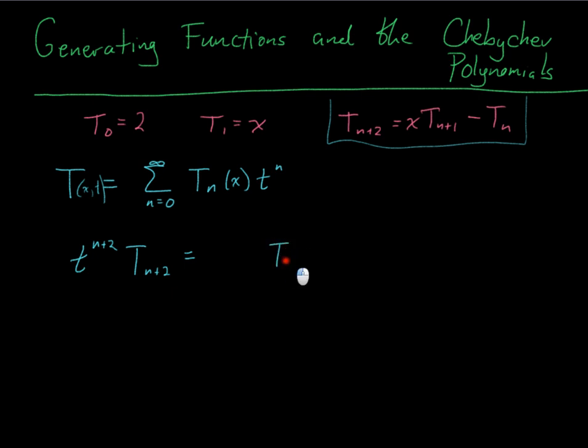Well this one really only wants t^(n+1) on it. So I'm going to put Tₙ₊₁·t^(n+1), and then I'm going to put the extra t on the outside. So I'm going to do x times t times all that.